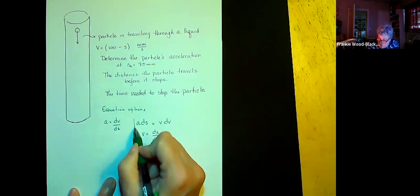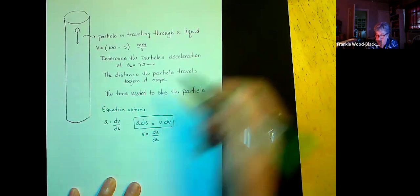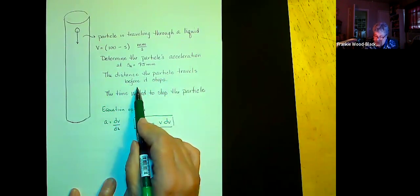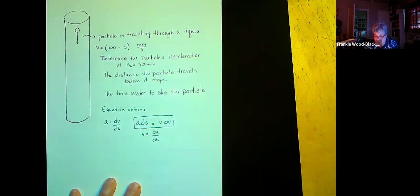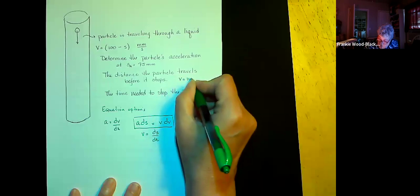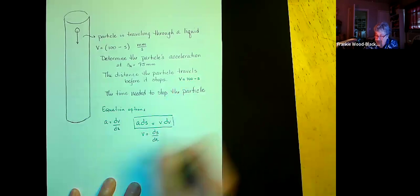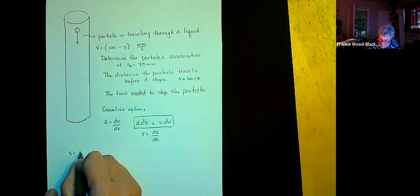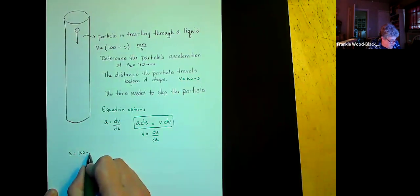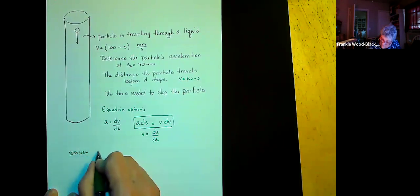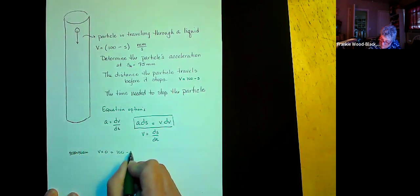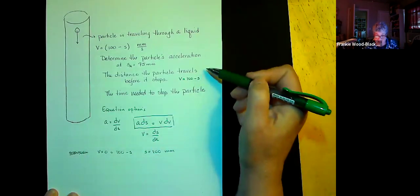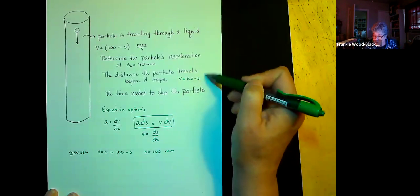If we want to play with the distance the particle travels before it stops, we actually have that information right away because we're told that v equals 100 minus s. So let's set our velocity equal to zero: 0 = 100 minus s, which gives us s equals 100 millimeters. So we didn't necessarily have to do anything complicated in order to do this part of the problem.